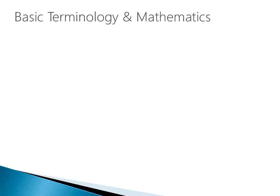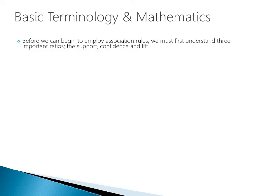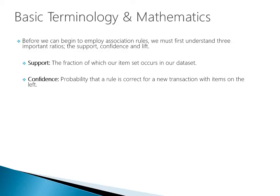Before we can really dive into association rules, we have to understand three important metrics: the support, the confidence, and the lift. The support is the fraction of which our item set occurs in our dataset. The confidence is the probability that a rule is correct for a new transaction with items on the left. And lift is the ratio by which the confidence of a rule exceeds the expected confidence. Now let's dive into each of these in a little more detail.